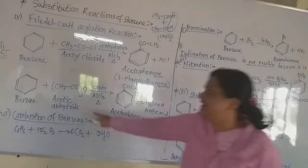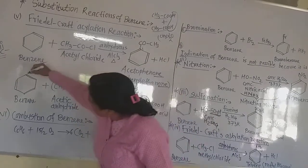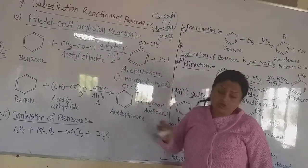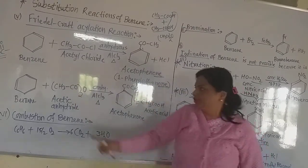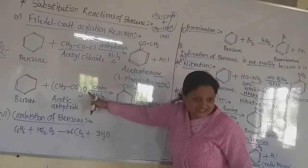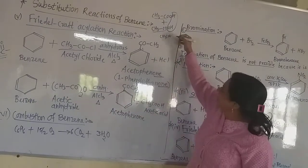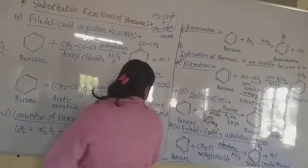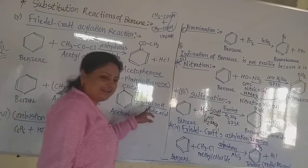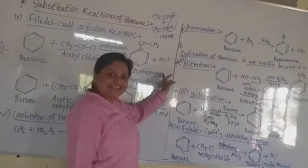This acetic anhydride then reacts with the benzene ring. The hydrogen atom of benzene is replaced by only one of the two acetyl groups, CH3CO–. The remaining acetyl group and the extra oxygen, along with the replaced hydrogen from benzene, form acetic acid CH3COOH as byproduct. So when we use acetic anhydride, the byproduct is acetic acid; when we use acetyl chloride, the byproduct is HCl.